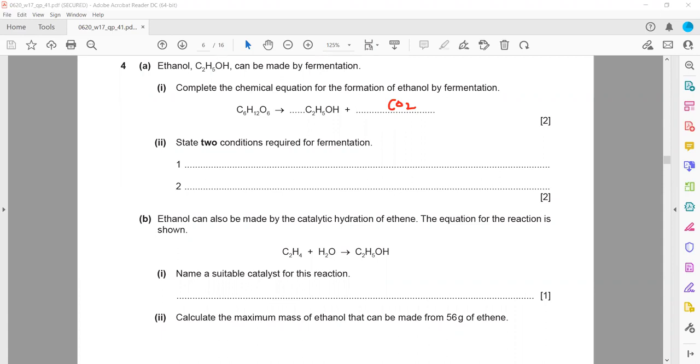Whenever you complete the equation, the equation must be balanced. What will be the number before ethanol and the number before carbon? You can use the screen annotation to complete balance this equation. Two ethanol molecules and two carbon dioxide molecules.